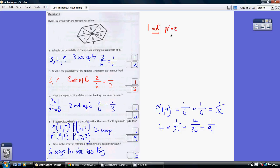2 is, 3 is, 5, 7, 11, 13 and so on. So how many prime numbers have we got here? We've only got 2, which are 3 and 7. So it's 2 out of 6, which simplifies by dividing top and bottom by 2 to a third.